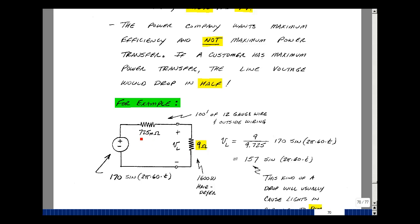Again, if I were to make my load the same value as this, I would have half the line voltage. The line voltage is about 170 volts sine times 2 pi 60 times t. So here's my voltage divider again. 9 ohms over 9.725 times the line voltage is about 157 volts times the same sine wave.